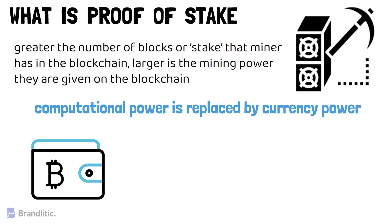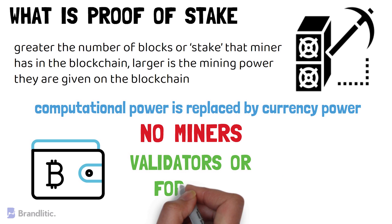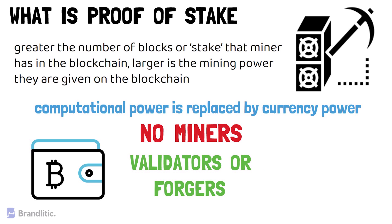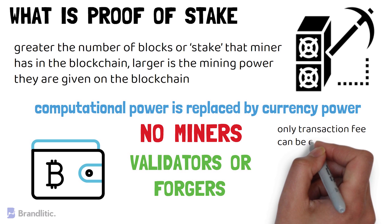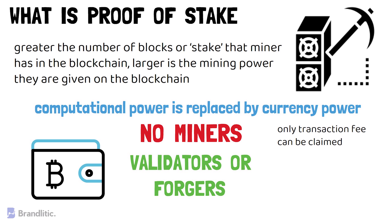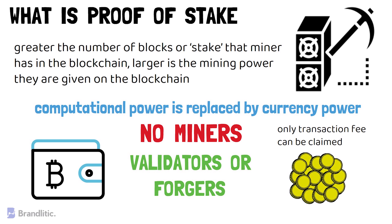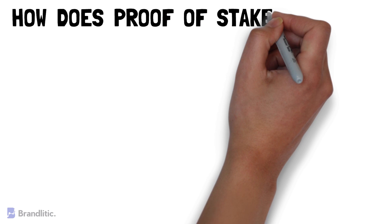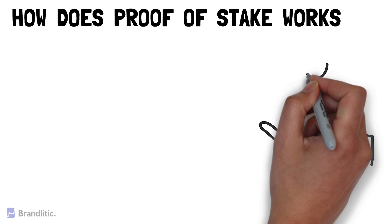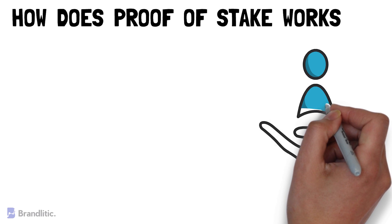There are no miners in the Proof-of-Stake system; instead, there will be validators or forgers, because there will be no block rewards and only a transaction fee can be claimed. In a Proof-of-Stake network, new coins will not be mined; instead, they will be produced by the creators at the time of launching the network and this number will never change. Instead of initiating a race to be the first validator, the Proof-of-Stake protocol randomly selects validators based on their stake in the network.